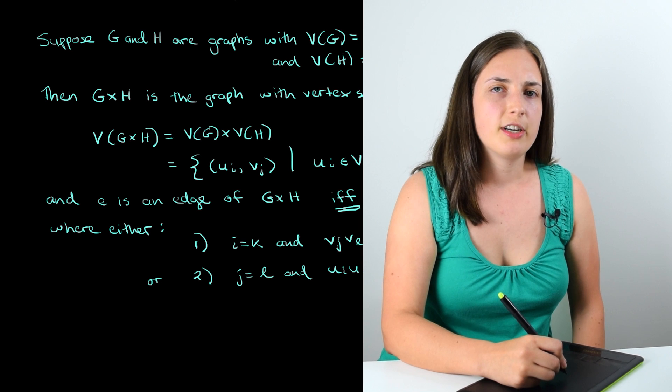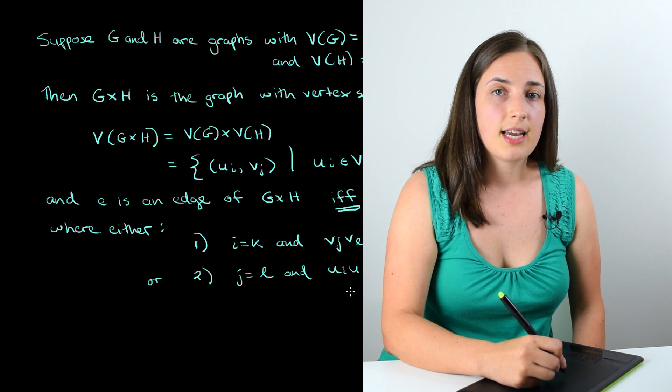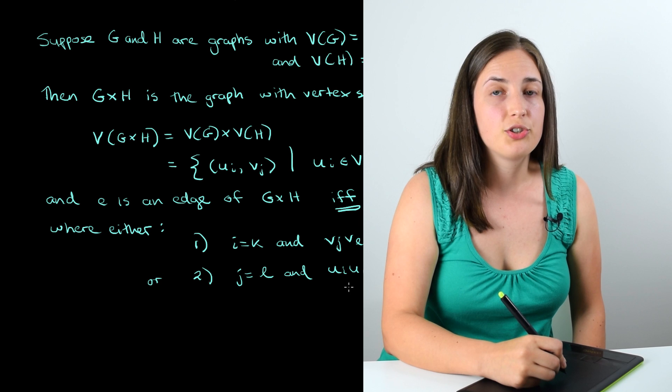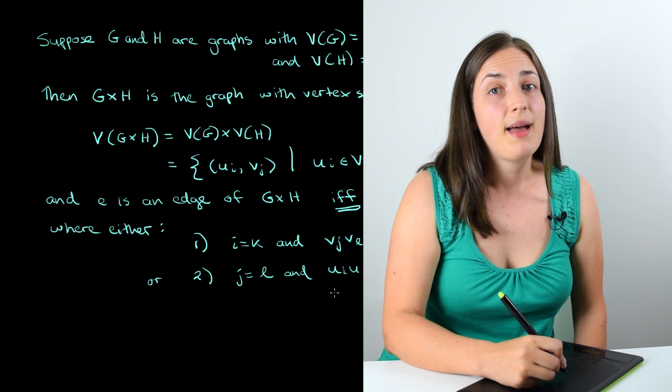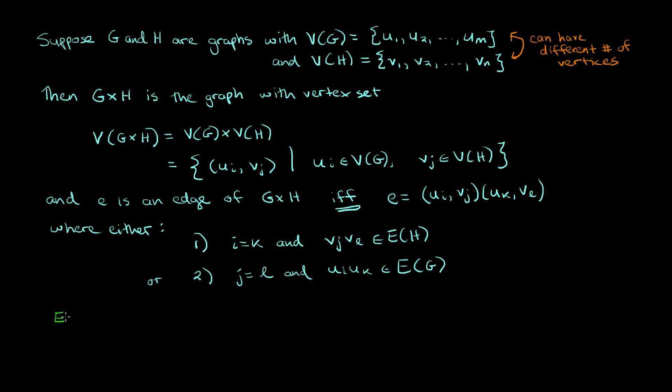Okay, well the formal definition may look a little bit long and technical, so we'll start with a simple example. We'll take a look at the Cartesian product of the complete graph on two vertices with the path on four vertices. So let's try it. So in this example, we're taking a look at the Cartesian product of K2 and P4. Let's say that we've labeled K2 with vertices x and y, and we've labeled P4 with vertices a, b, c, and d, like this.